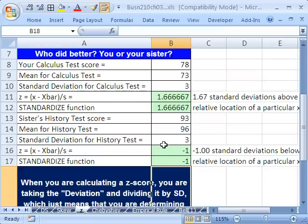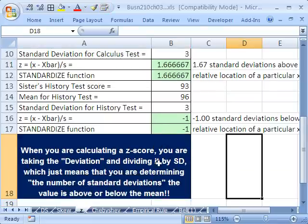All right, so that's z-score. When calculating z-score, you're just taking the deviation and dividing it by the standard deviation, which just means that you're determining the number of standard deviations above or below, and we get this relative location.